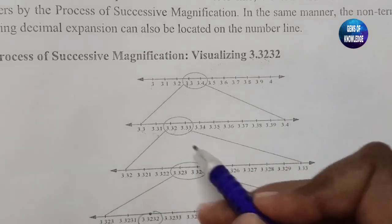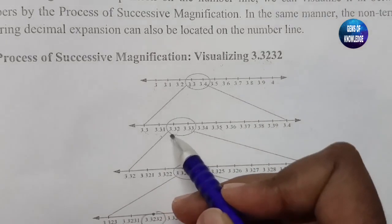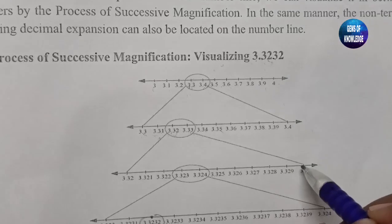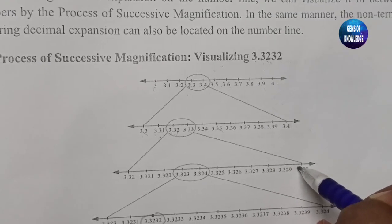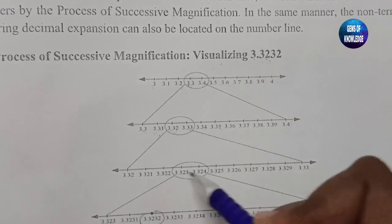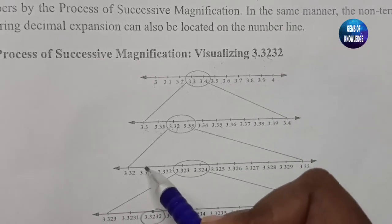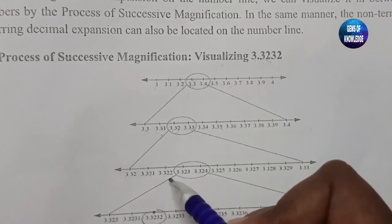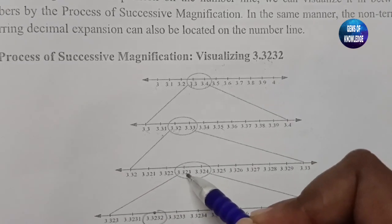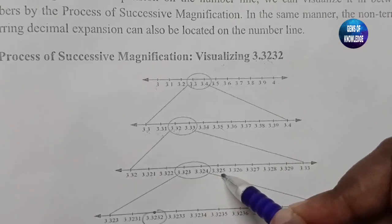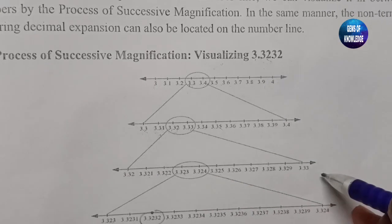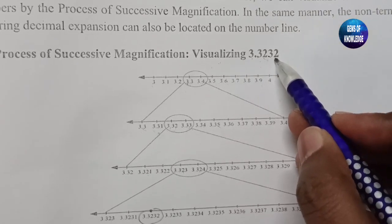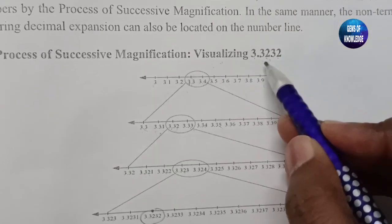After enlarging again, we can find 3.32 here and 3.33 here. Between these two numbers there are again many numbers: 3.321, 3.322, 3.323, 3.324, 3.325, 3.326, and so on. We now take 3.323 and the next number 3.324.